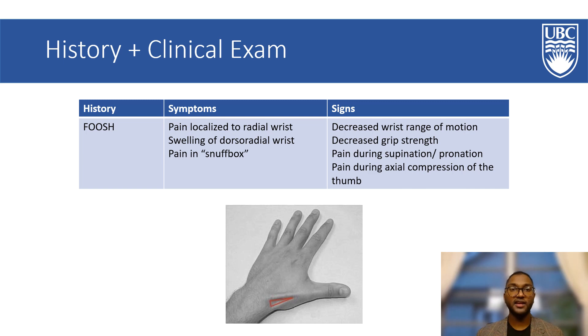Signs of a scaphoid fracture include decreased range of motion in the wrist, decreased grip strength, pain during supination and pronation, and pain during axial compression of the thumb.